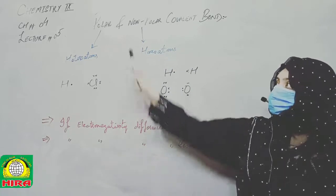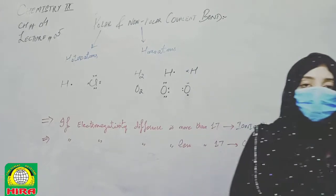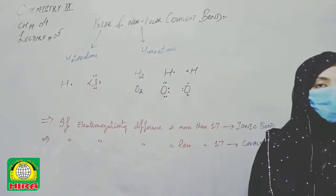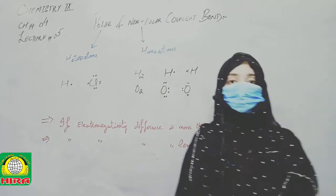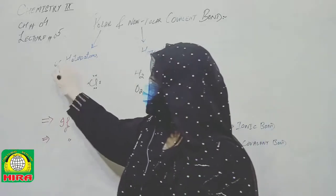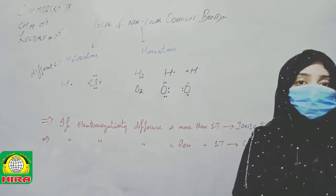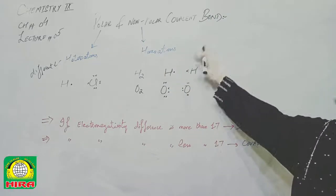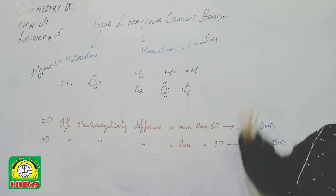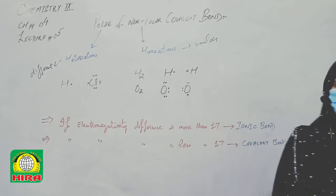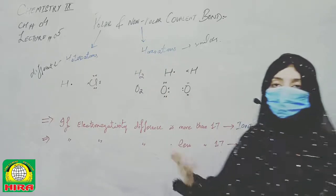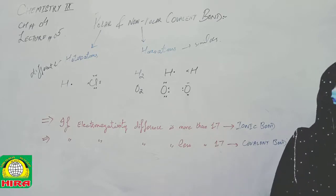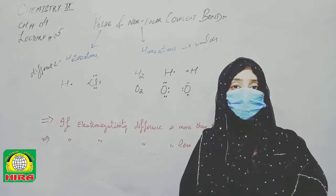A covalent bond formed between different atoms — hetero atoms — is called a Polar Covalent Bond. A covalent bond formed between similar atoms — homo atoms — is called a Non-Polar Covalent Bond. For polar bonds, we discussed examples such as NaCl, HCl, KBr, and water, which are formed between different atoms.